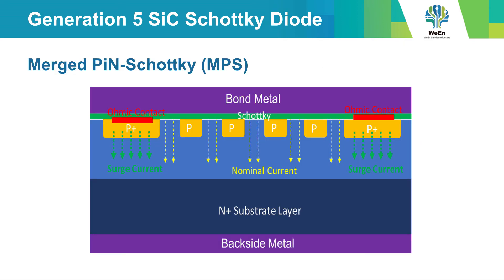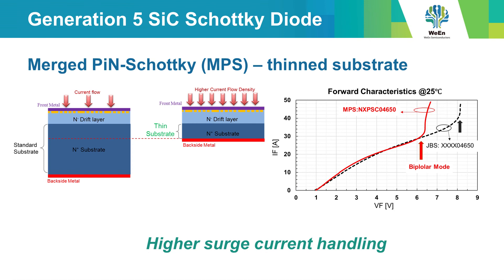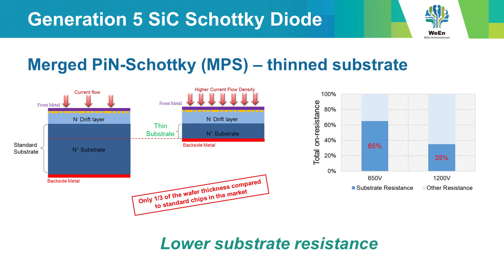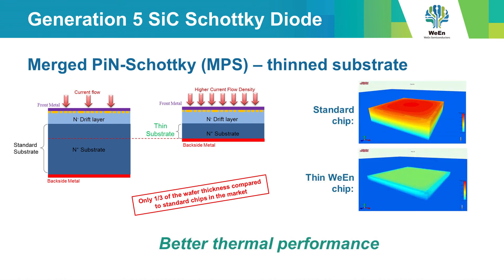The generation 5 silicon carbide Schottky diodes are so-called MPS — merged pin Schottky — diodes with a thinned substrate. These parts offer a higher surge current, lower substrate resistance, and better thermal performance.